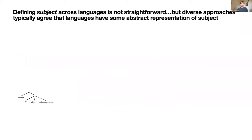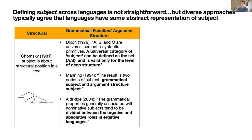Despite this difficulty, diverse approaches typically agree that languages have some abstract representation of subject. There's a structural opinion that subject might be a specific structural position in a tree. There's also been a lot of work on ergative languages looking at the split between semantic and syntactic subjects. Dixon writes that a universal category of subject can be defined as the set A and S, valid only at the level of deep structure — a core semantic approach.